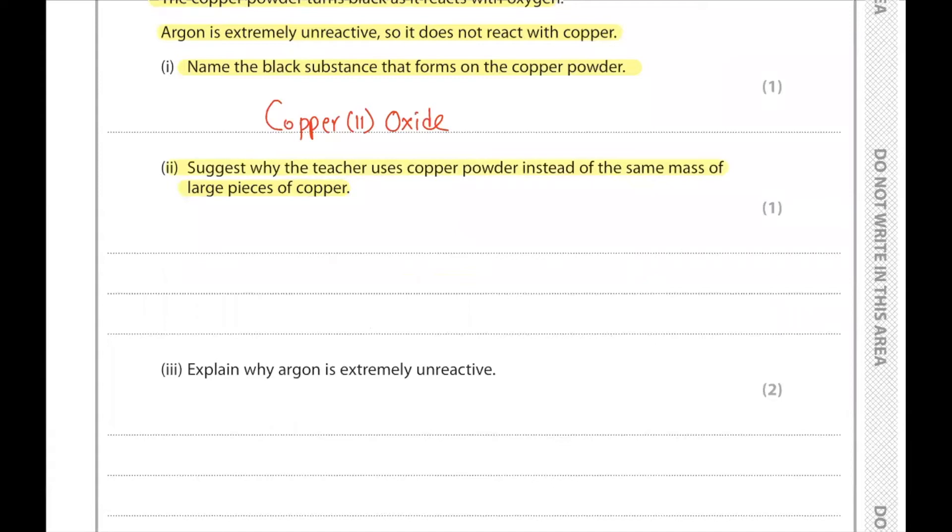Suggest why the teacher uses copper powder instead of the same mass of large piece of copper. Copper powder gives a greater surface area than a large piece of copper, so it will allow faster reaction.